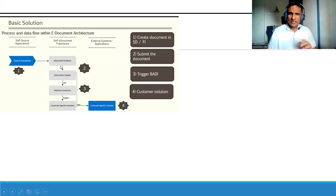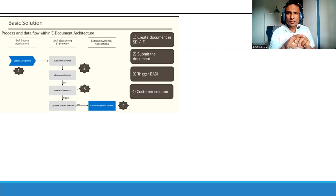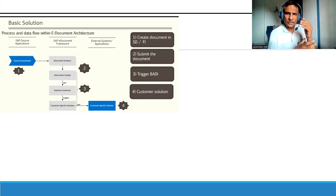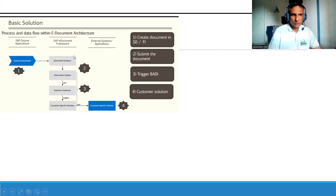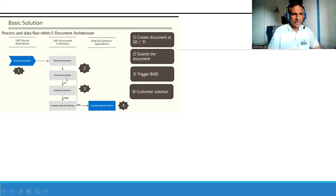SAP has a certain background framework that converts the invoice information into the format the specific government is looking for. If you take Colombia you have one format, Brazil has one format, India has one format of electronic invoice. This is the e-document cockpit - whatever the source document information is, it will be converted using the e-doc instance background SAP program, and all invoices will be captured in the e-doc cockpit.